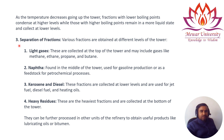In the third step, we talk about separation of fractions. Various fractions are obtained at different levels of the tower. First, light gases are collected at the top of the tower and include gases like methane, ethane, propane, and butane. Second, naphtha is found in the middle of the tower and is used for gasoline production and as a feedstock for petrochemical processes.